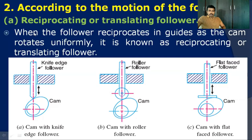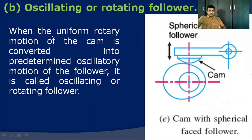The next variety is an oscillatory or rotary follower. The cam rotates at a uniform rate, and the follower placed on the cam surface oscillates about a fixed point due to the cam rotation. When the uniform rotary motion of the cam is converted into predetermined oscillatory motion of the follower, it is called an oscillating or rotary follower. Oscillatory motion is nothing but rotary motion over a segmental circumferential length.